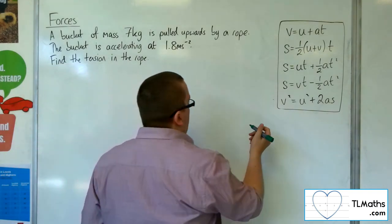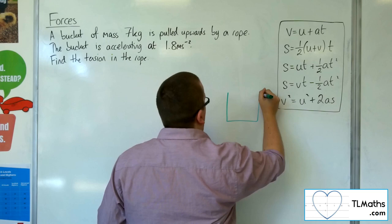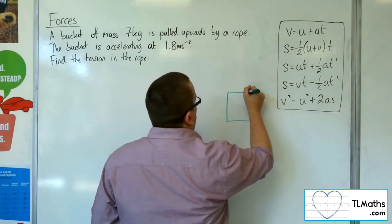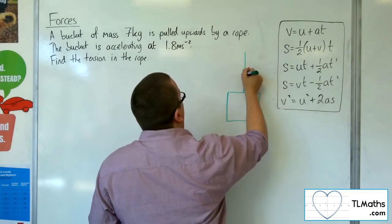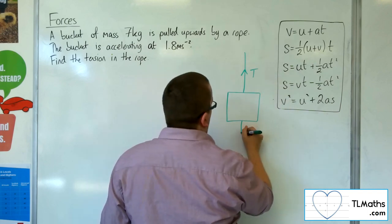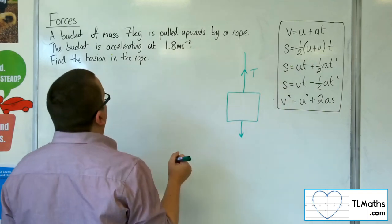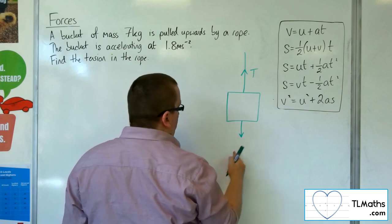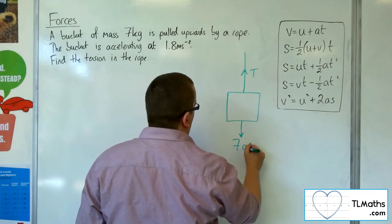So here is the bucket, here is the rope. There is tension in the rope. There will be the weight of the bucket working vertically downwards, which is mass times gravity, so 7g.